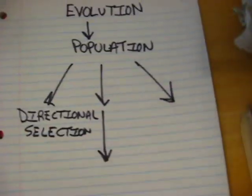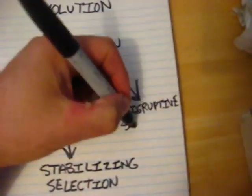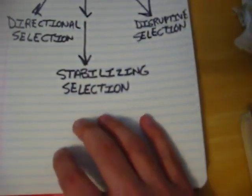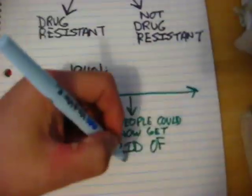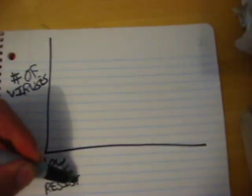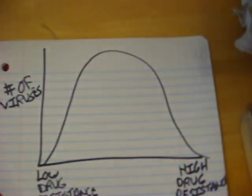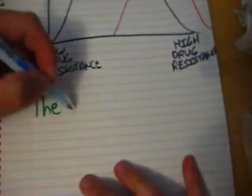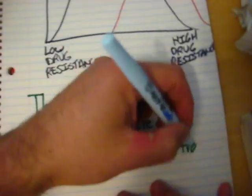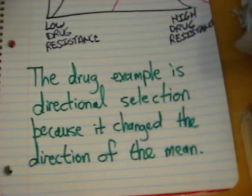There are basically three ways in evolution to make a change in a population. The first is called directional selection. Using viruses as an example: there are drug-resistant viruses and viruses that are not drug-resistant. Up until the 1940s it didn't really matter, but now people can take drugs to get rid of viruses, so non-resistant viruses have a lesser chance of surviving. There's now an advantage toward high drug resistors, shifting the mean average in that direction — this is directional selection, because it changes the direction of the mean either to the left or the right.